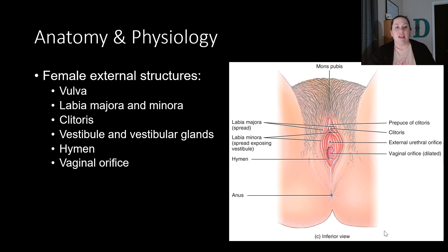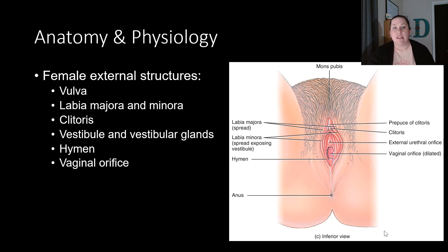The vulva is going to be the outer opening or vault of the reproductive system. It is lined by the labia majora and minora, which are known as the lips. The outer labia majora are going to have hair present, whereas the minora, which are on the inside, are going to be hairless. We also see that there's the clitoris in this area, which is the area of arousal for females and is homologous to the tissue found in the penis in males.